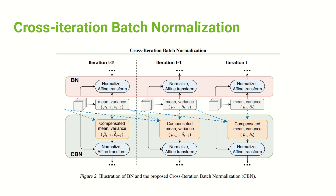In the upper part, there are different iterations: on the far right, iteration T is the current time; going back one step is T minus one, and T minus two. In normal batch normalization, you calculate the mean and variance across only the current batch size — that's a single result. However, in Cross-Iteration Batch Normalization, shown in the lower part, it doesn't only calculate the current time snapshot — the blue arrows show it crosses previous iterations to get those means and variances and sums them together.